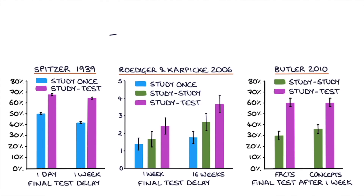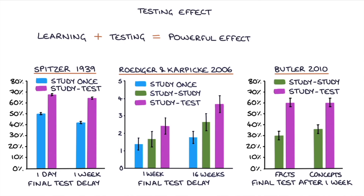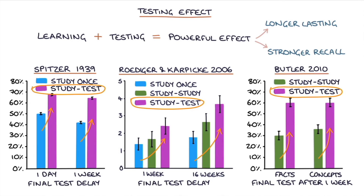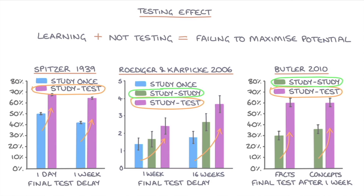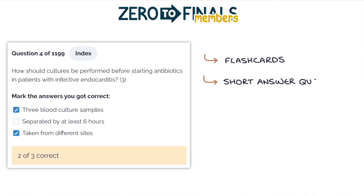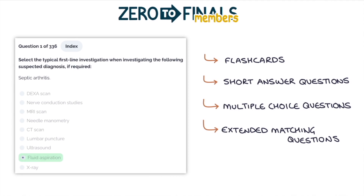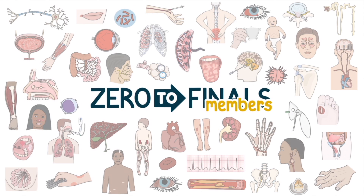Research has consistently shown that testing yourself after learning a topic has a powerful effect on how long you retain that information — this is known as the testing effect. Studying and then testing yourself results in longer-lasting and stronger recall, even when compared with additional study sessions. The Zero to Finals member site contains flashcards, short answer questions, multiple choice questions, and extended matching questions purpose-built to supplement the Zero to Finals content, helping you build your knowledge and take advantage of the testing effect.